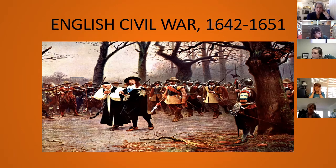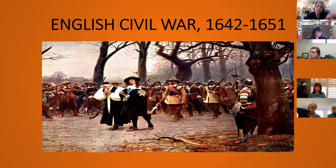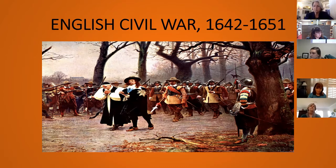Charles I is executed in 1648 — regicide. Other monarchs across Europe, even those who disliked him, were shocked. Cromwell, in the name of the people, takes control of the government and becomes Lord Protector. There's a wonderful Monty Python song about Cromwell, Lord Protector. He strengthens his powers in 1653 and rules for about eight and a half years in place of a king, attempting to impose a military Puritan rule — which was an absolute disaster.